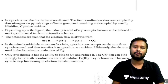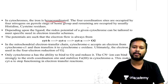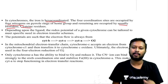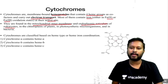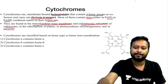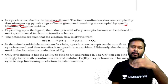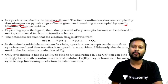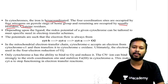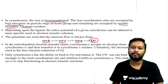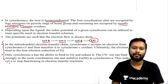In cytochromes, iron is hexa-coordinated: four coordination sites occupied by nitrogen atoms of the pyrrole rings of the heme group, and the remaining two occupied by histidine and cysteine residues. Depending on the ligand, the redox potential can be tailored. The order of redox potential in the mitochondrial electron transfer chain is: cytochrome b highest, then cytochrome c, then cytochrome a.